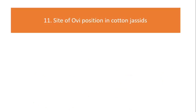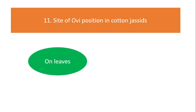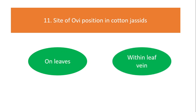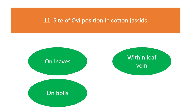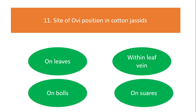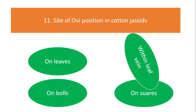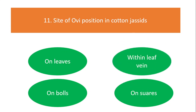Site of oviposition in cotton jassids: on leaves, within leaf vein, on walls, or on squares? The answer is within leaf vein.